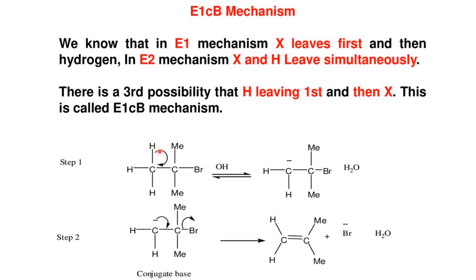There is also the E1CB reaction mechanism. In E1CB, hydrogen leaves first forming a carbanion, and then X leaves — this is the reverse order compared to E1. First hydrogen cleaves, then X leaves.